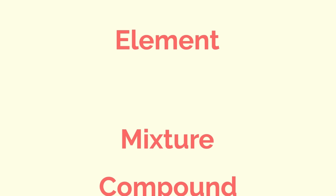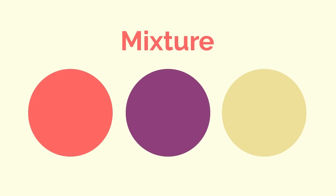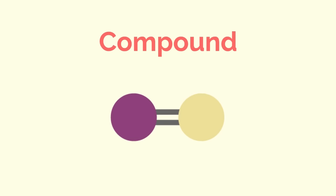Firstly, some definitions. An element is a substance that cannot be broken down into anything simpler. A mixture is a substance consisting of two or more substances mixed together, not in fixed proportions and not chemically bonded. And a compound consists of two or more elements chemically combined.